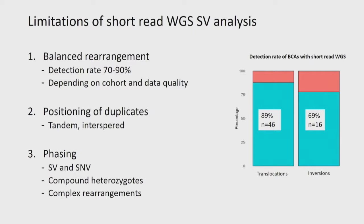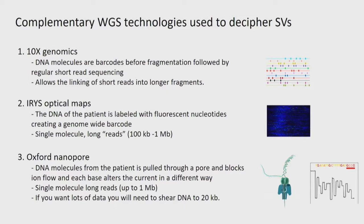The complementary WGS technologies we used include linked-read sequencing with the 10x Genomics protocol, where you barcode your DNA before fragmentation and then after regular short-read sequencing reassemble these long molecules. We also used Bionano optical mapping, where you nick your DNA, label with fluorophores, and get genome-wide barcodes — to me, it's like really, really long chromosomes. However, you do not have nucleotide resolution here, and resolution depends on how many barcodes you have in a specific region.